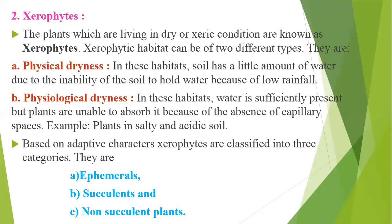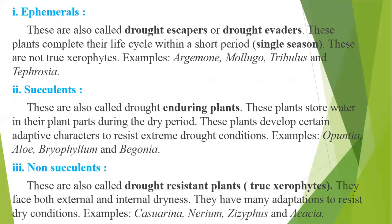Based on adaptive characters, xerophytes are classified into three categories: ephemerals, succulents, and non-succulents. Ephemerals are also called drought escapers or drought evaders. These plants complete their life cycle within a short period, that means a single season. These are not true xerophytes.